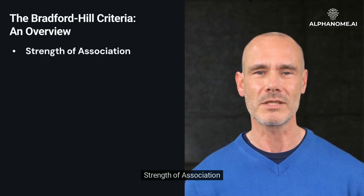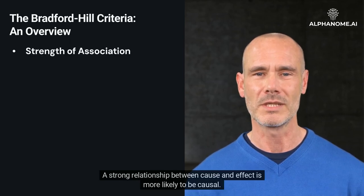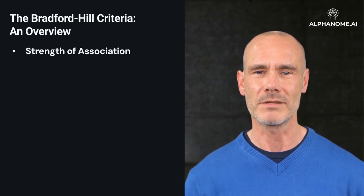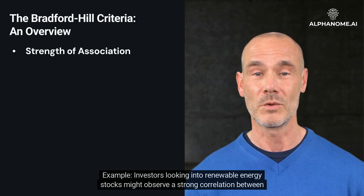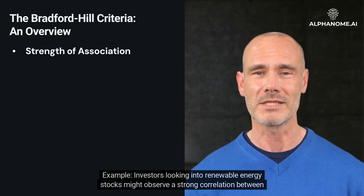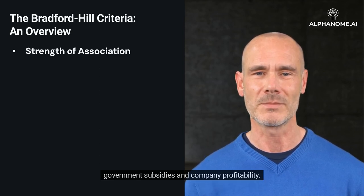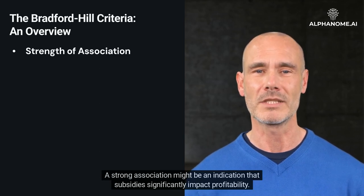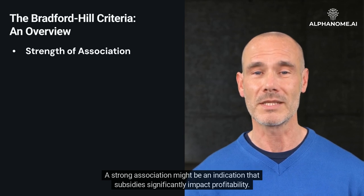Strength of Association: A strong relationship between cause and effect is more likely to be causal. Example: investors looking into renewable energy stocks might observe a strong correlation between government subsidies and company profitability. A strong association might be an indication that subsidies significantly impact profitability.